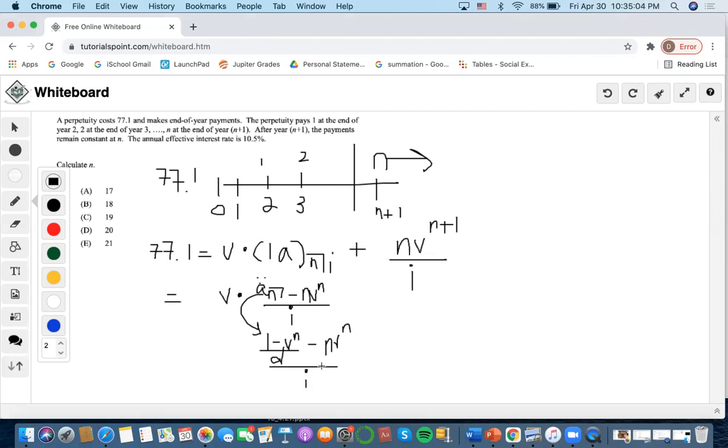We know that d equals i times v. When we multiply v to both terms, v crosses out for this part. When v applies to this term, it becomes n times v^(n+1).